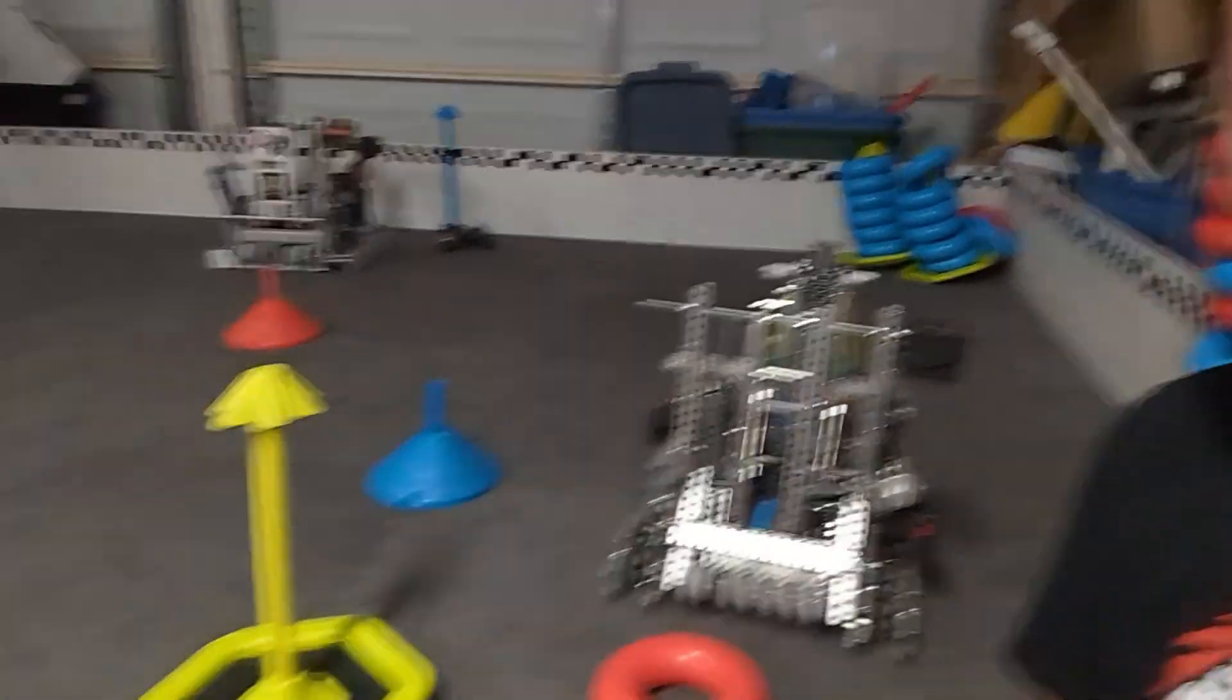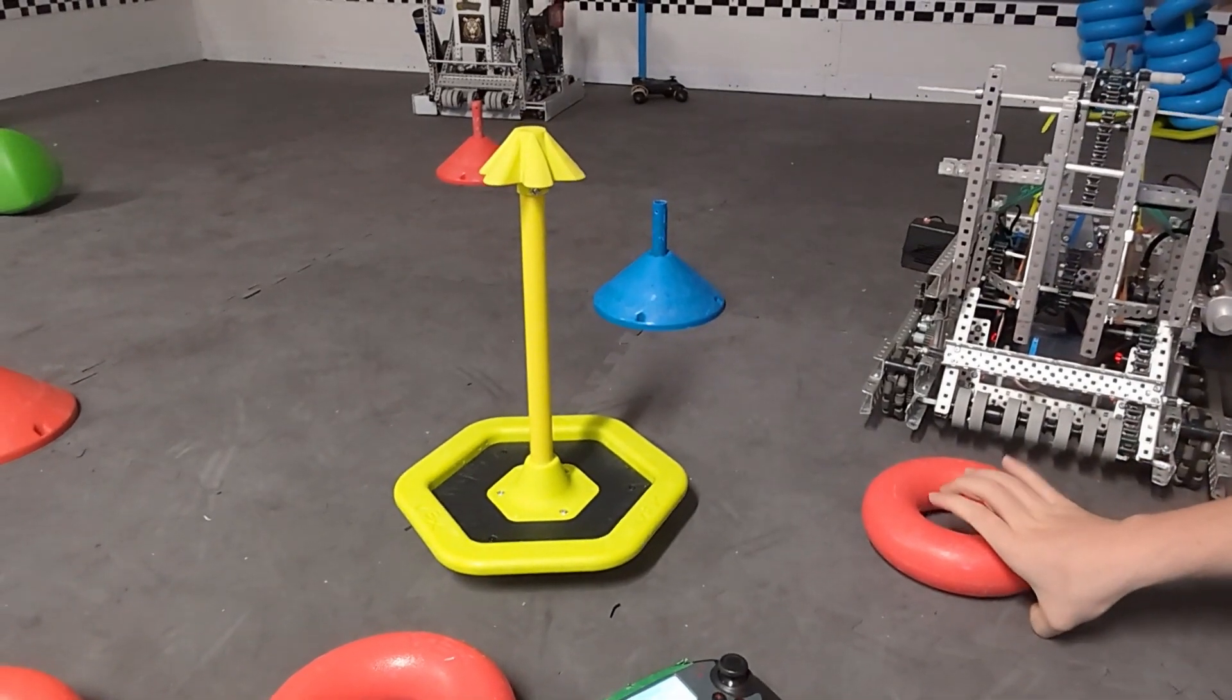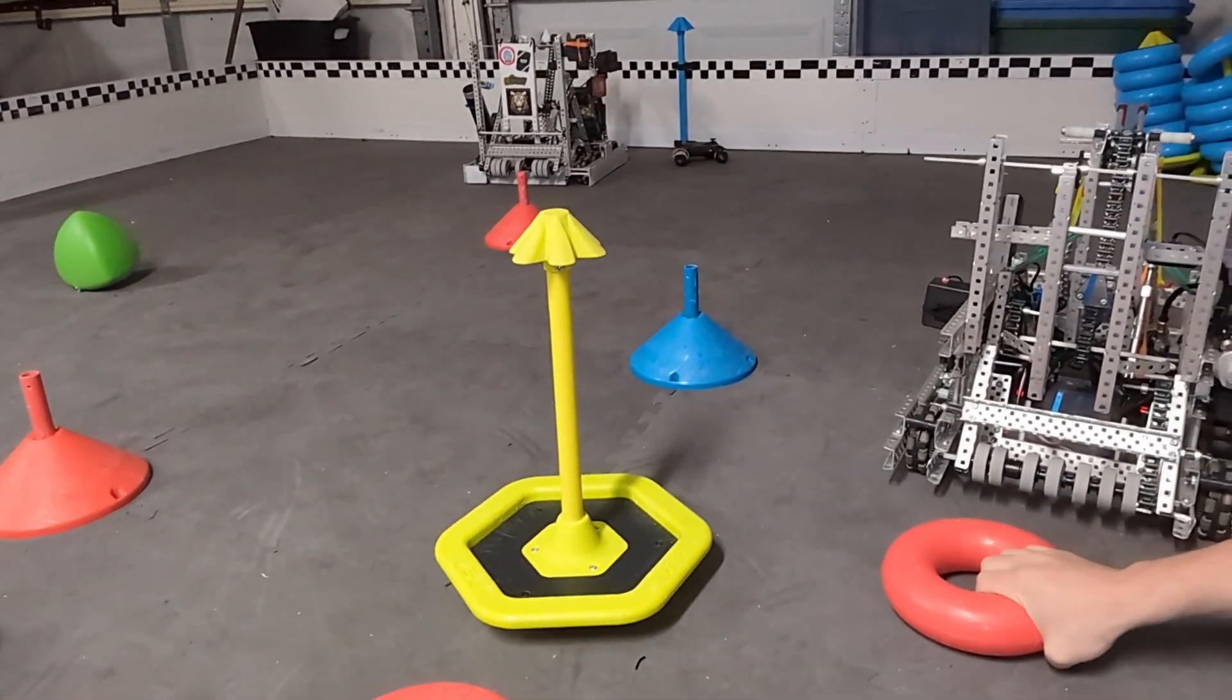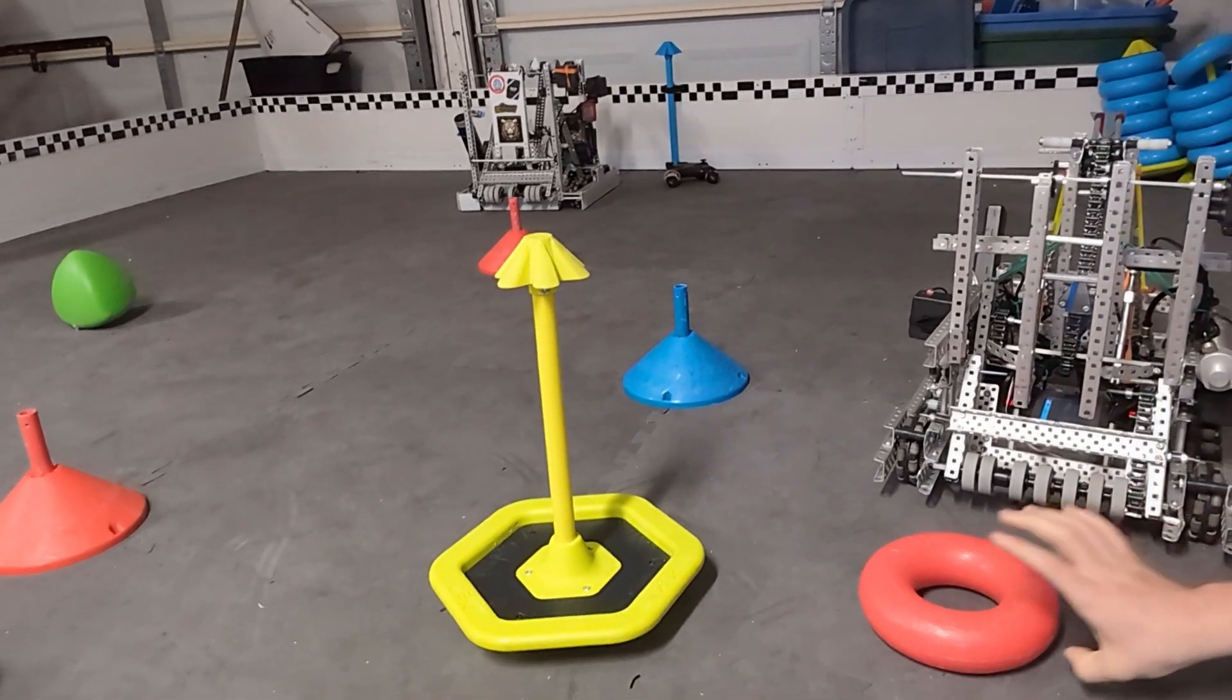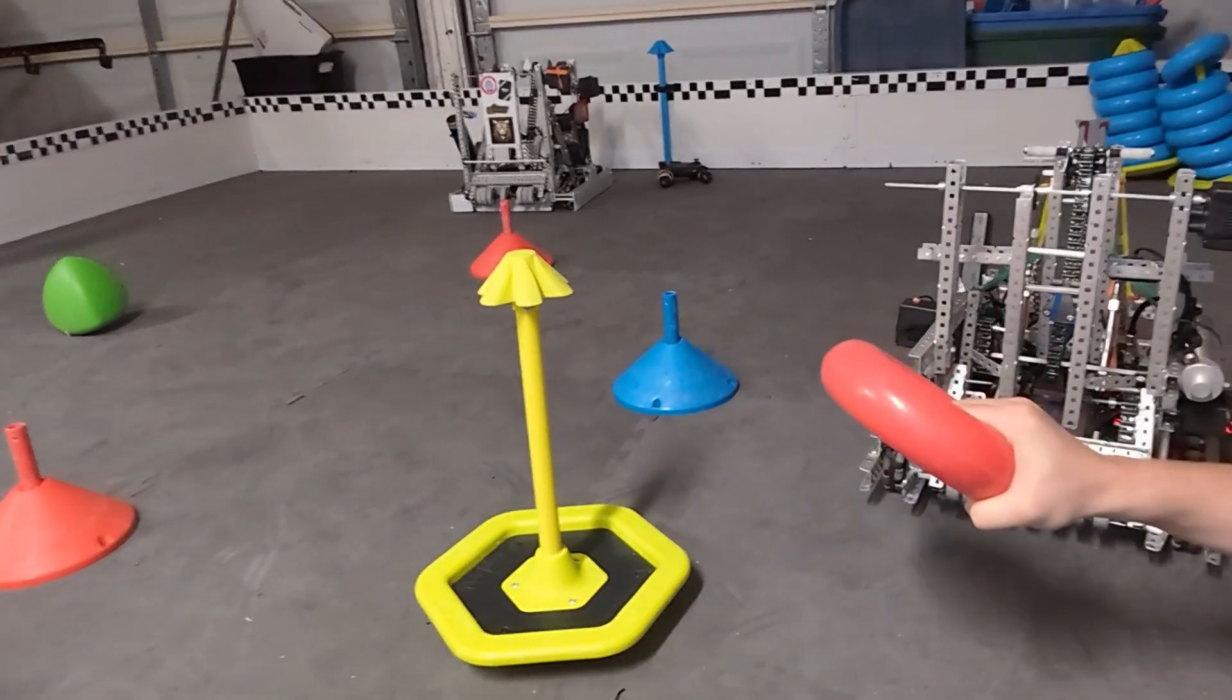See, here's the thing about touch it, own it. When you go into a game piece with a claw, you have to go into it and then grab it with a claw. You have to wait till you're there and then grab it. That is not touch it, own it. You have to go up to it, touch it, then grab it, then you own it.